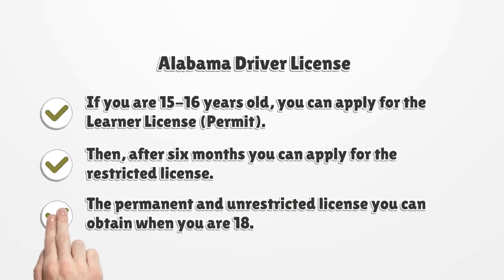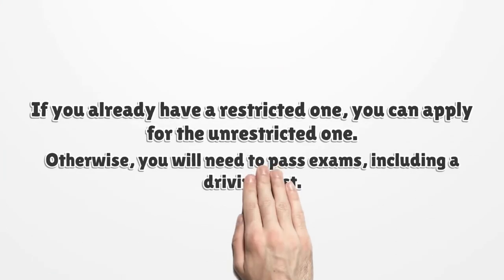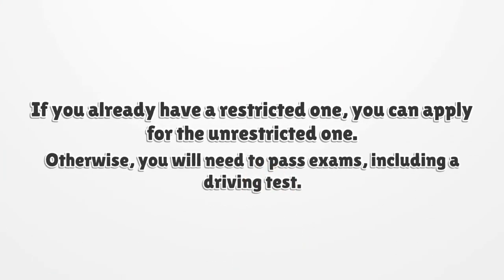If you are 15 to 16 years old, you can apply for the learner license permit. Then, after 6 months, you can apply for the restricted license. The permanent and unrestricted license you can obtain when you are 18. If you already have a restricted one, you can apply for the unrestricted one. Otherwise, you will need to pass exams, including a driving test.